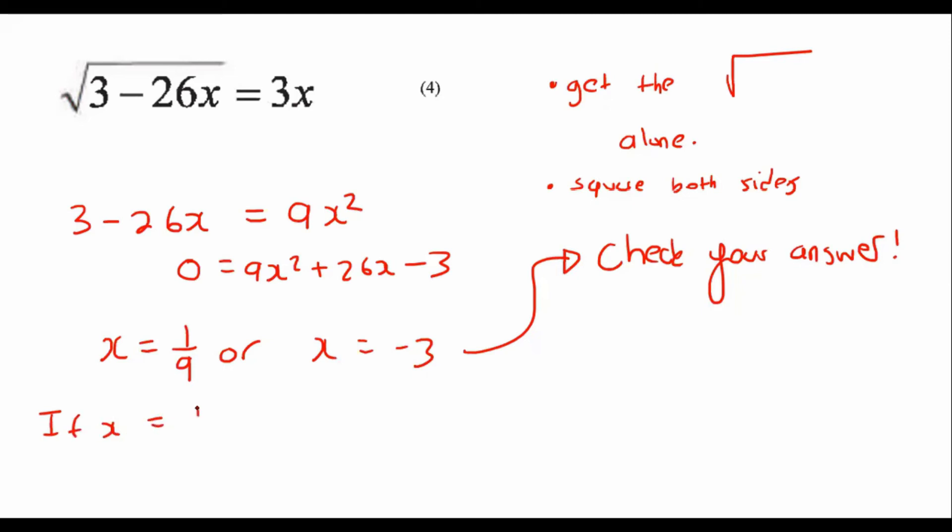If x equals 1 over 9, let's quickly see what the left-hand side will become, and then we can see what the right-hand side will become. Okay, so I'm going to put 1 over 9 over here, so that's going to give us 3 minus 26 times 1 over 9, and if I work that out, I get 1 over 3.